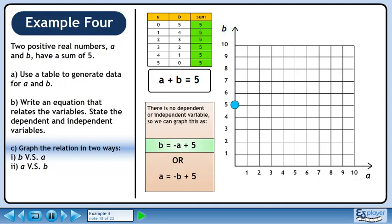Now plot the b-intercept. Use a slope of minus 1 to draw in the line. We can use a solid line for this relation since A and B are real numbers.